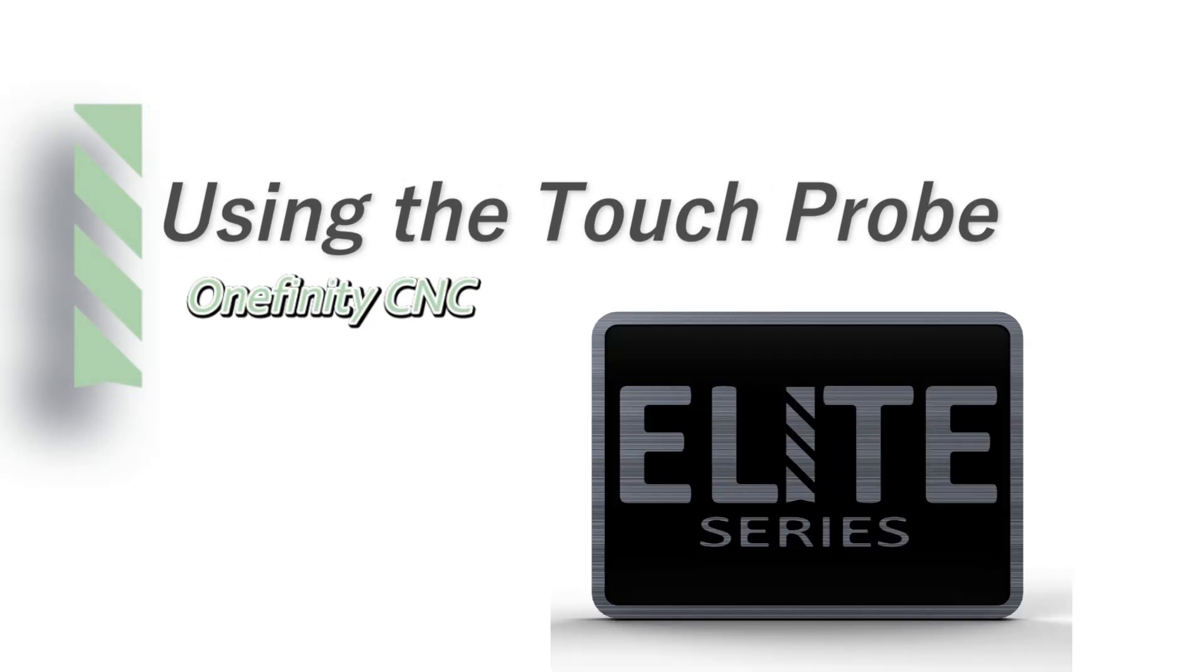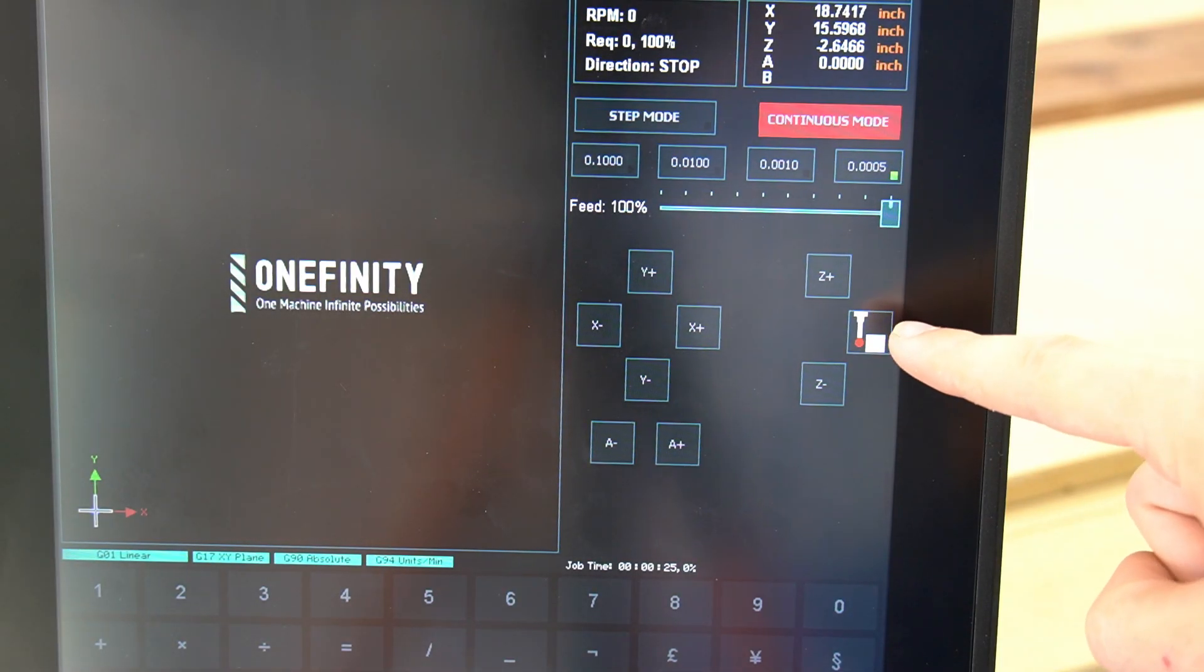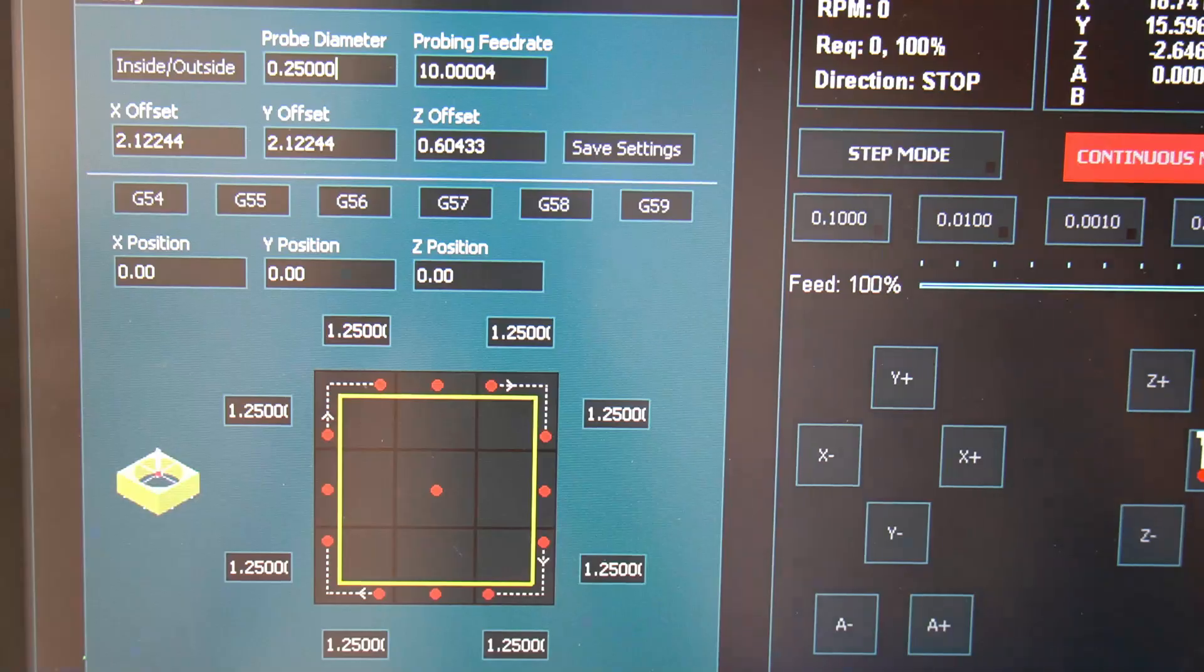Using the touch probe with the Onefinity CNC Elite Series. On the tab labeled F3 on the top, select the probing icon button.